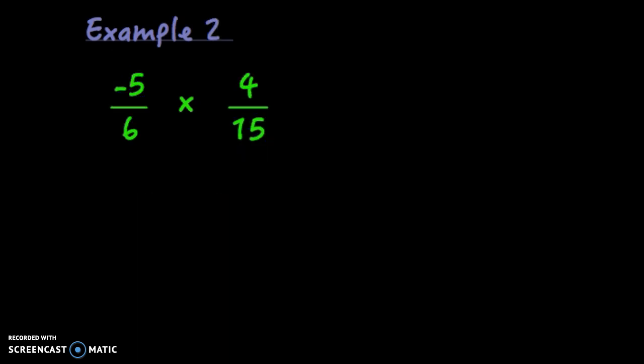So this method is negative 5 sixths times negative 4 fifteenths. Notice again, we have no mixed numbers, so we can move right into cross-canceling. And I'm going to start with negative 5 and 15. They both have a common factor of negative 5 or positive 5. I'll probably just divide them both by positive 5. Negative 5 divided by 5 is negative 1. 15 divided by 5 is 3.